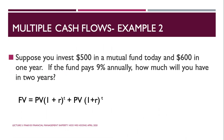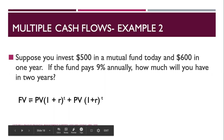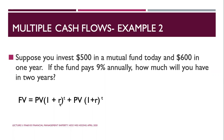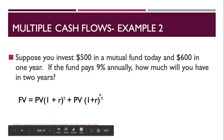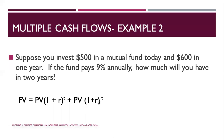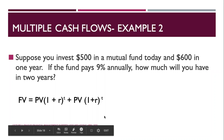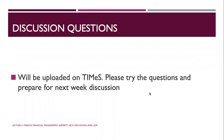Multiple cash flows example two: suppose you invest $500 in a mutual fund today and $600 in one year. If the fund pays 9% annually, how much do you have in two years? The first investment of $500 compounds for two years: 500 × (1.09)^2. The second investment of $600 compounds for one year: 600 × (1.09)^1. Add both results to get the total future value in two years.